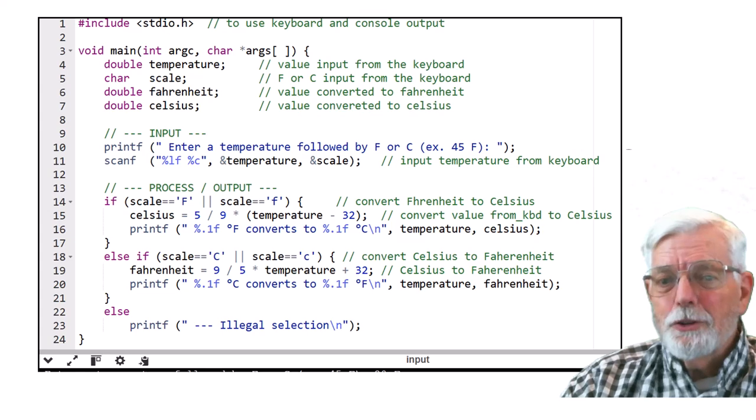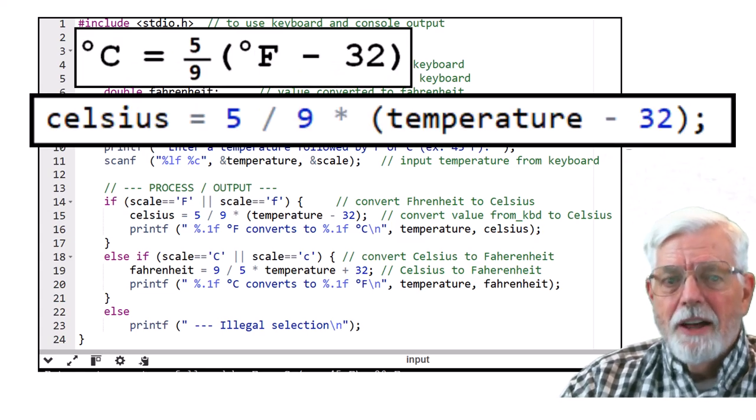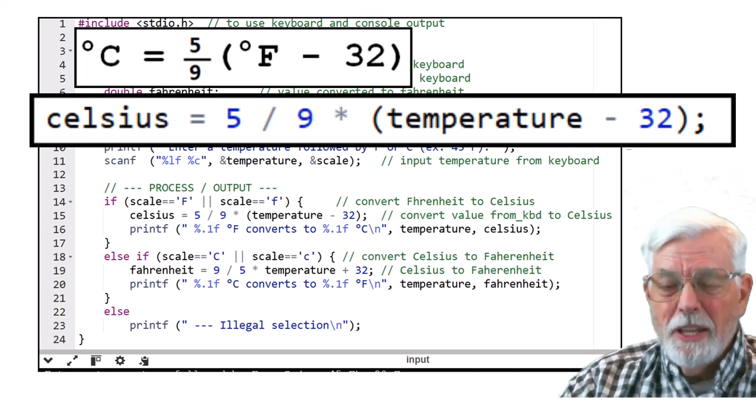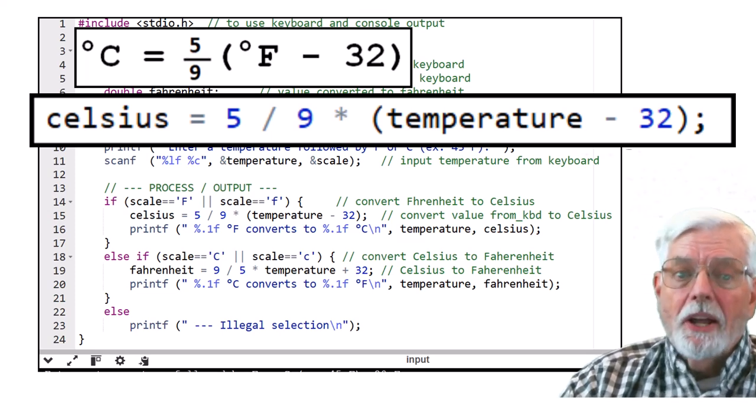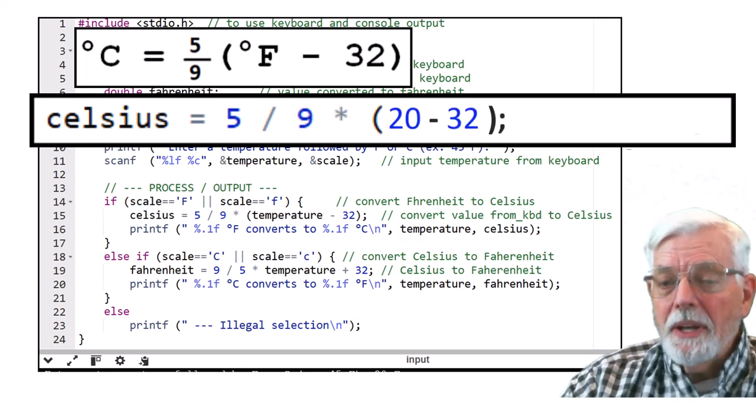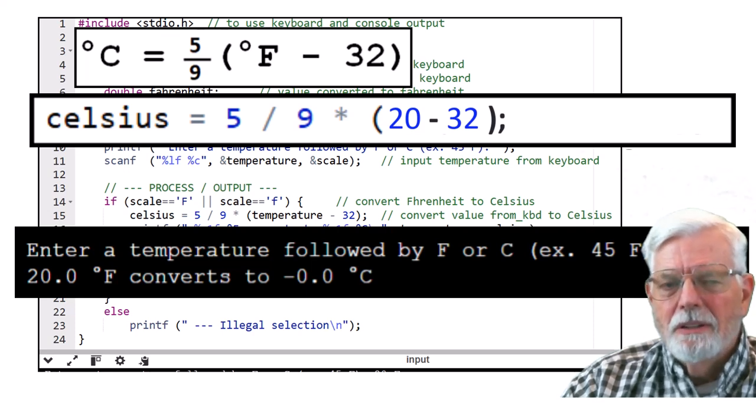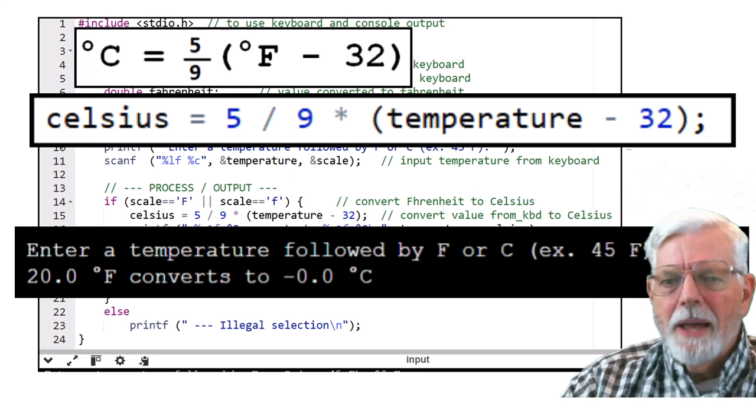Look carefully at the conversion formula and see if it was coded correctly. Celsius, 5 divided by 9 times, open parenthesis, temperature minus 32, close parenthesis, semicolon. It looks good to me so far. We could try hard coding at 20 in place of the variable temperature to see if we get negative 6.67 degrees C. Nope. That wasn't it. Put temperature back in the program.